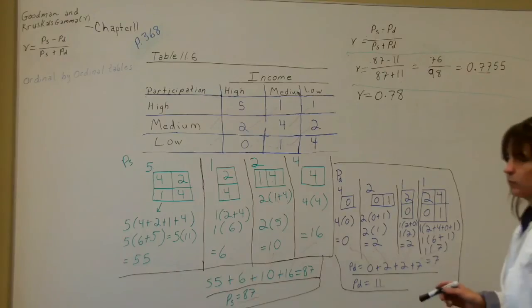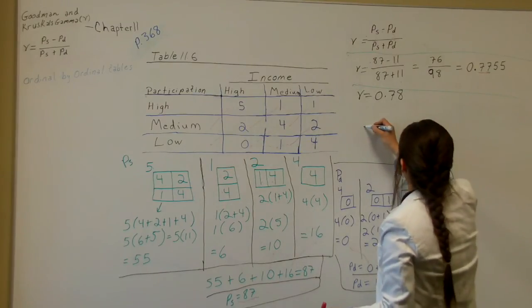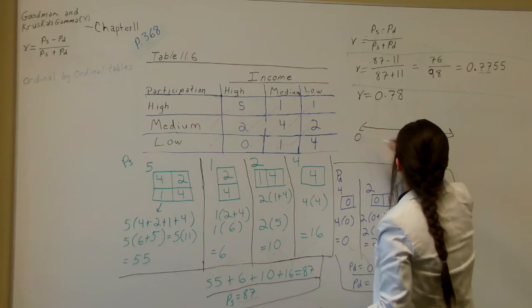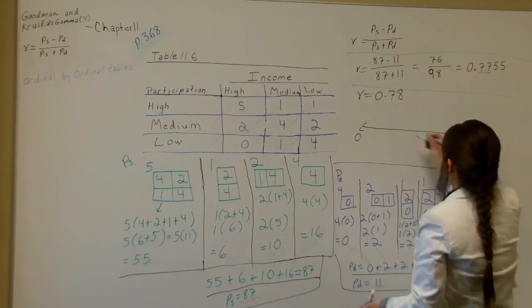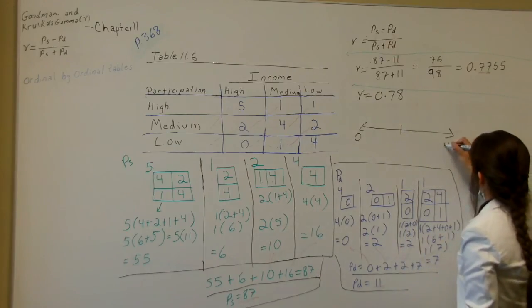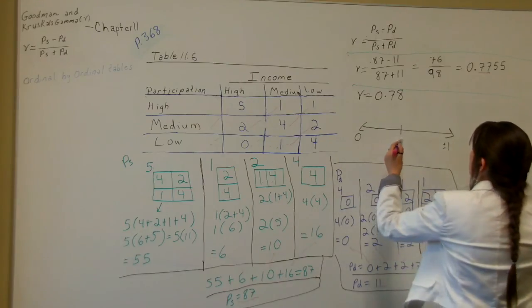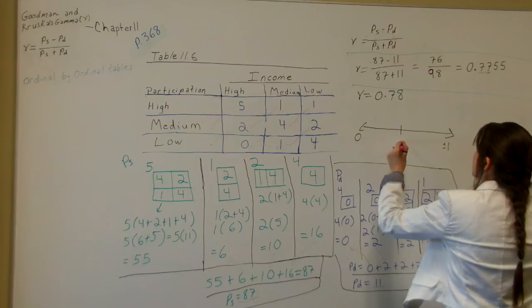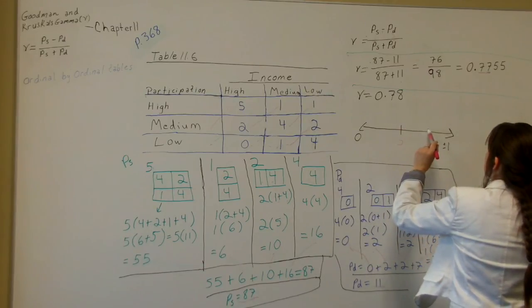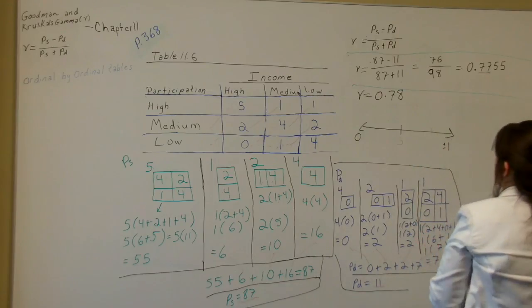And remember when we were talking about the relationship, zero saying there's nothing going on here, and one saying there's definitely a positive relationship. This could be positive or negative one. Let's say 0.5 is in the center. And we have a 0.78. So this is somewhere around here. We do have a relationship going on here.